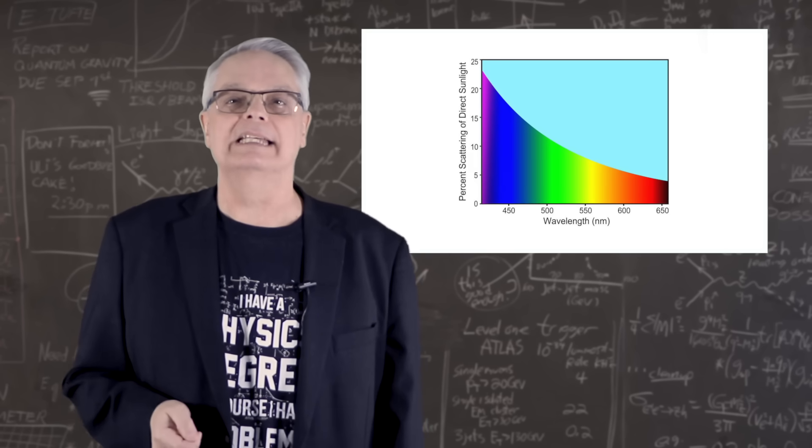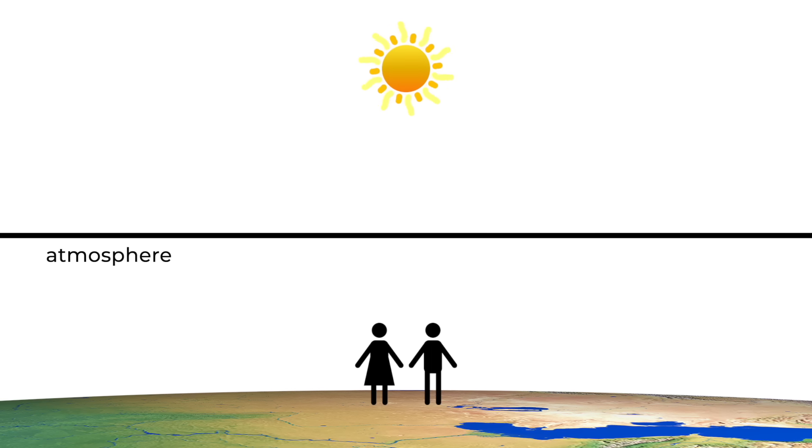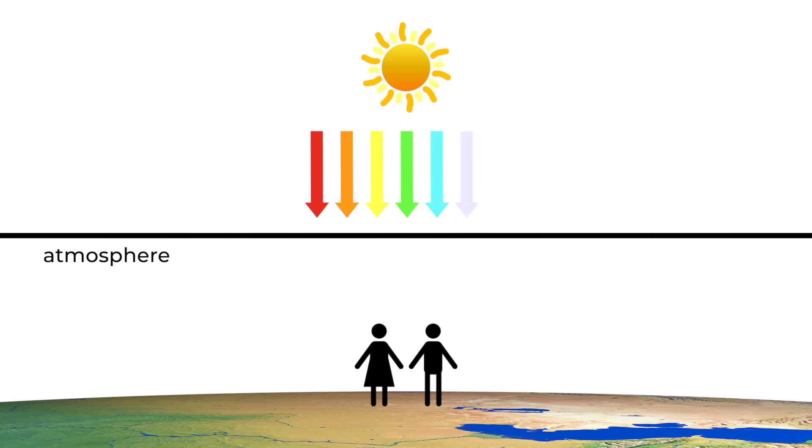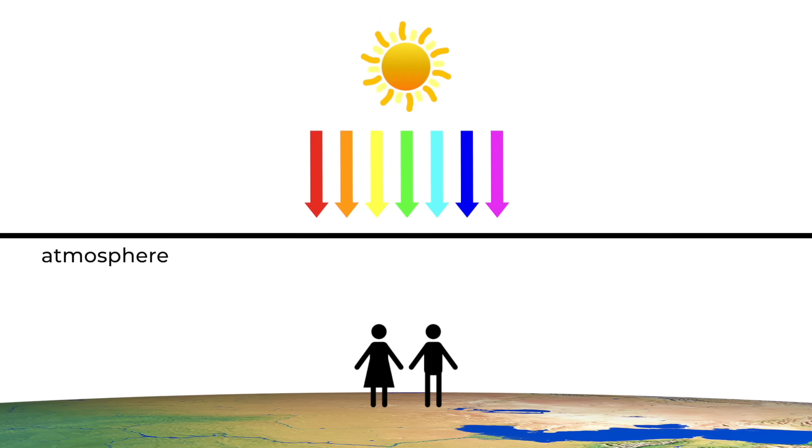So the big idea is that the sun emits all of the wavelengths. Red, orange, yellow, green, blue, indigo, and violet. The whole Roy G. Biv thing.